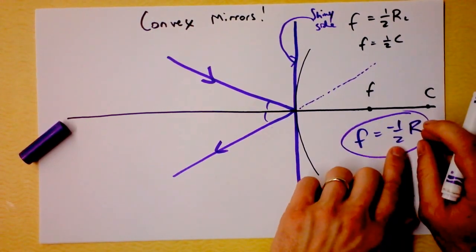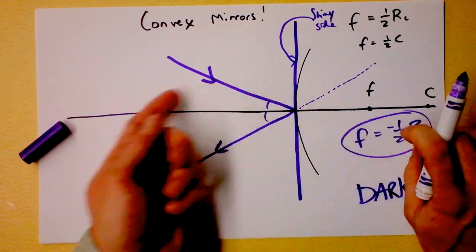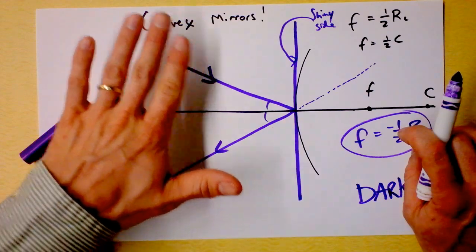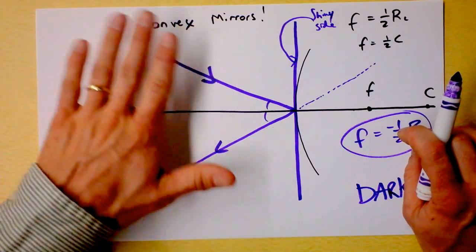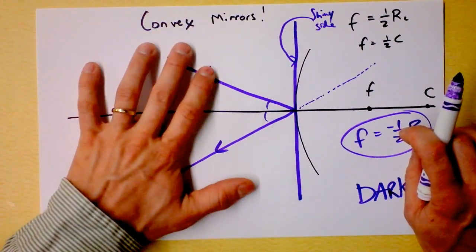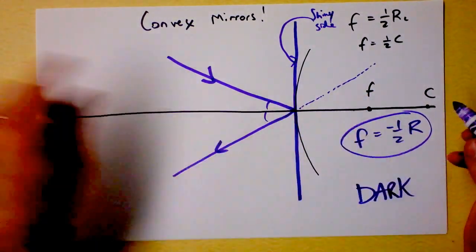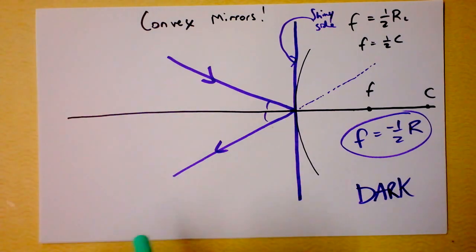And that means that the focal point is on the opposite side of the light. It's on the opposite side of our object. And so there's stuff over here, real stuff happening over here and the focal point's on the wrong side of it, which is a little bit silly. But that's what that minus sign is telling us. So let's get another ray going here.